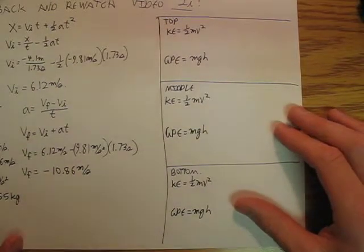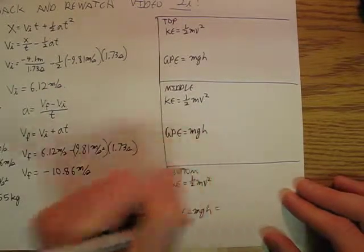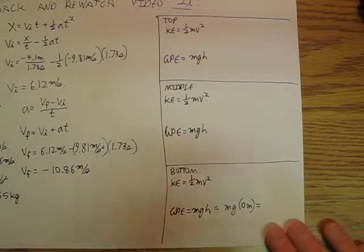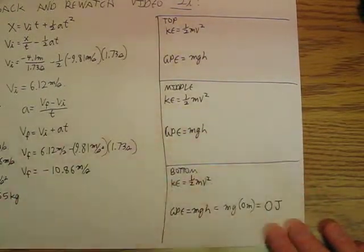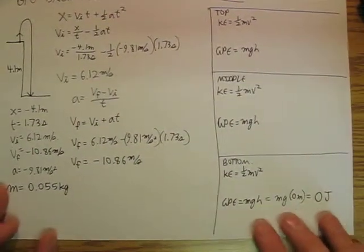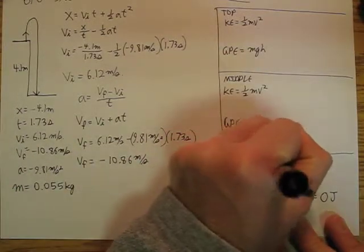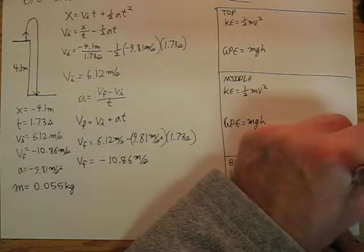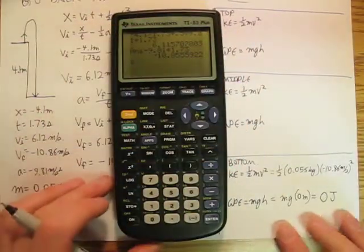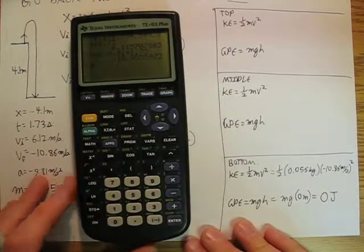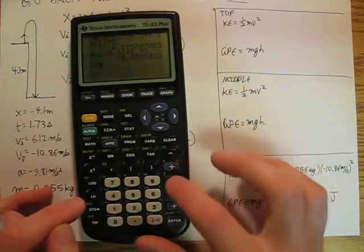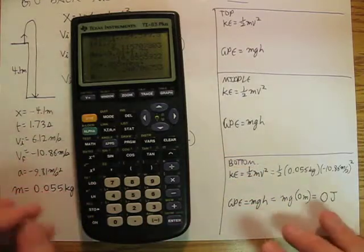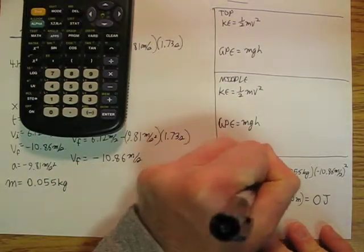Let's start at the bottom. At the bottom, let's say the height is zero, so I've got mg times zero meters — gravitational potential energy of zero joules. My kinetic energy is going to be one-half of zero point zero five five kilograms times negative ten point eight six meters per second squared. So I do point five times point zero five five times the answer squared, and I get three point two four joules of kinetic energy.